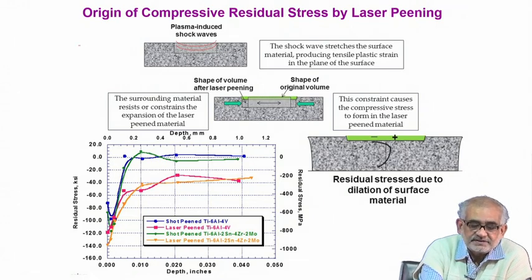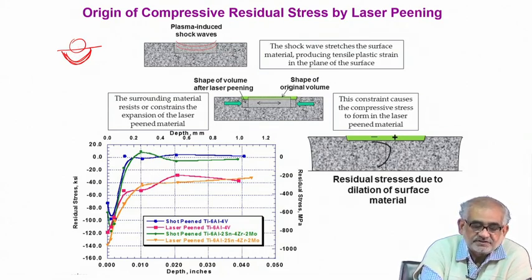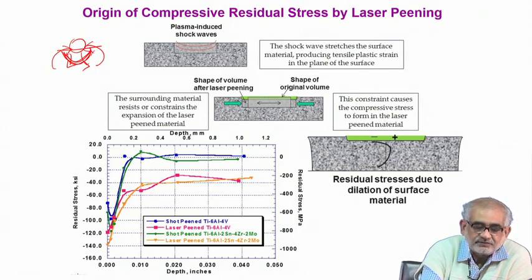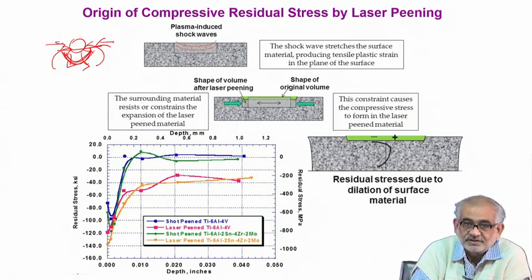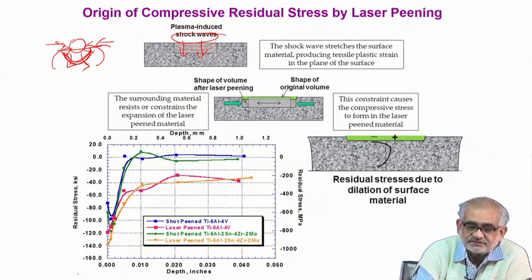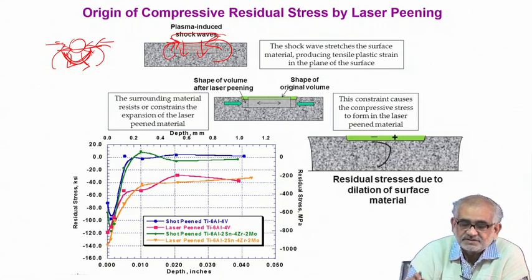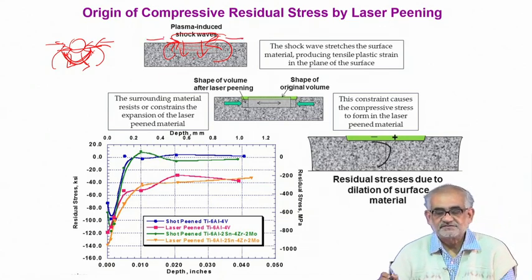Just like in shot peening or shock peening when the striker hits, there is a deformation zone below the projectile incident on the surface. Initially the material tends to deform, but subsequently the material wants to spring back, and that is how we create a state of compressive stress on the surface. The same thing happens with plasma-induced shock waves — instead of a physical object hitting the surface, it is the shock wave created through the plasma which tends to deform the material. Because of the reaction to this tendency of deformation, you create stresses that are compressive (negative) in nature.